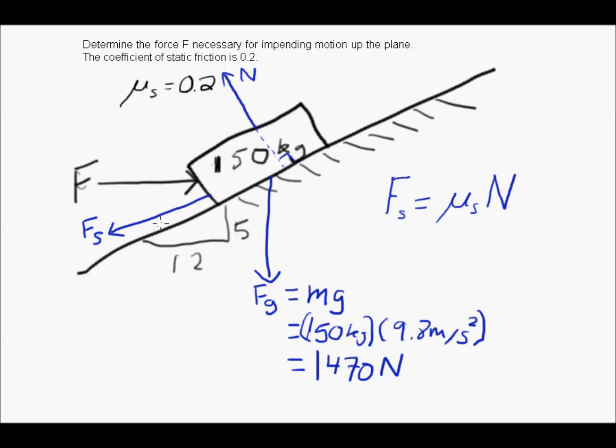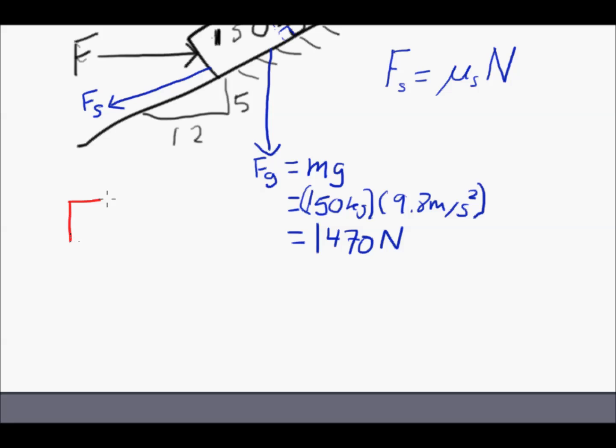So we need to start drawing free body diagrams to figure that out. So I'll draw a quick free body diagram. Here is the block. We have the force F going in this direction. There is the static friction going down in this direction, the same direction as the plane, so it has the 12 and 5. The other forces are Fg and the normal force. Since the normal force is perpendicular to this force, it will have the opposite slope or triangle here. That means it has 12 going up and 5 across.